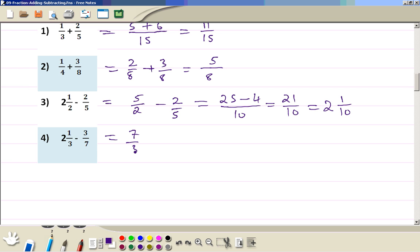7 over 3 minus 3 over 7. 7 times 5 minus 3 times 3 divided by 3 times 7. 21 going to 40 once, 22 going to 50 once.